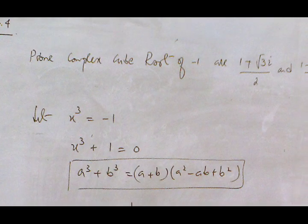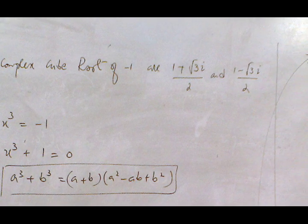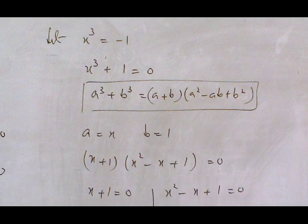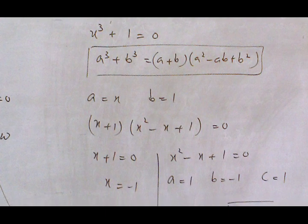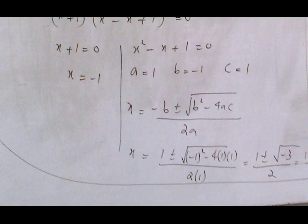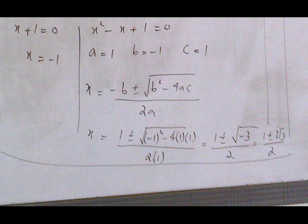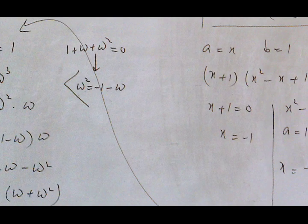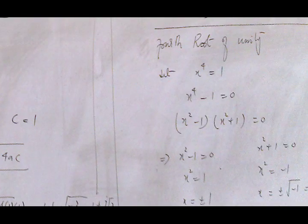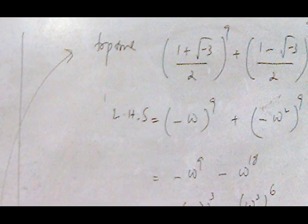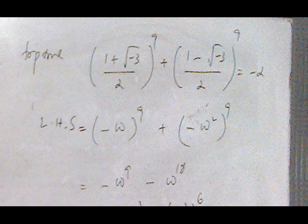In this question we prove complex cube roots of -1. We move -1 to the left-hand side and apply the sum of cubes formula a³ + b³. One solution gives x = -1 and for the other we apply the quadratic formula. The other part is to show a sum equals -2: one pair equals -2, one is -ω, and the other is -ω².